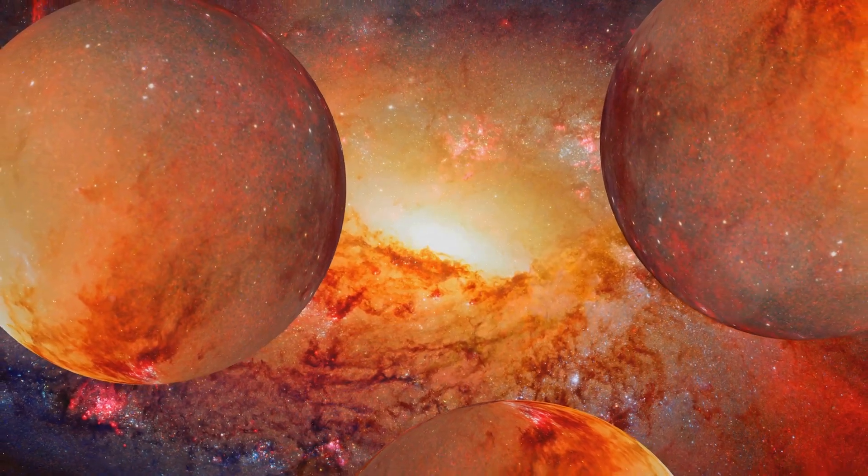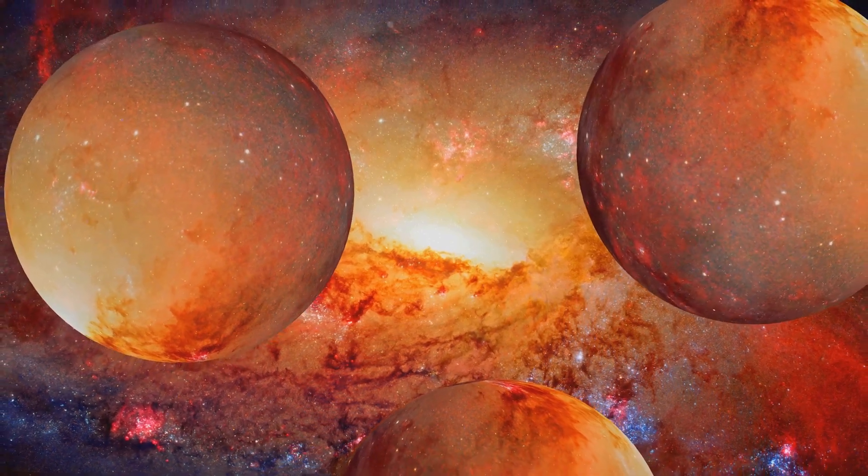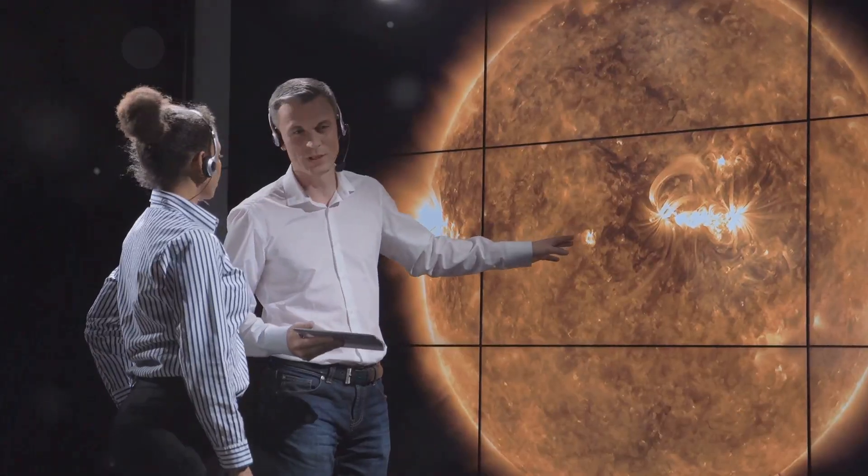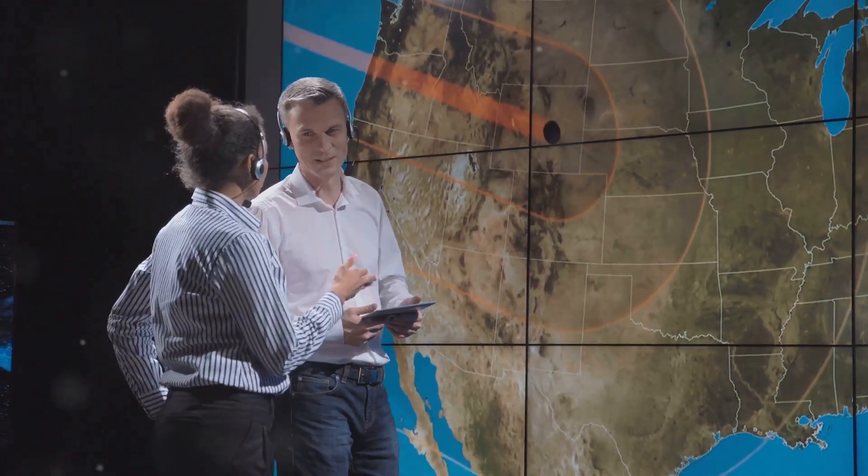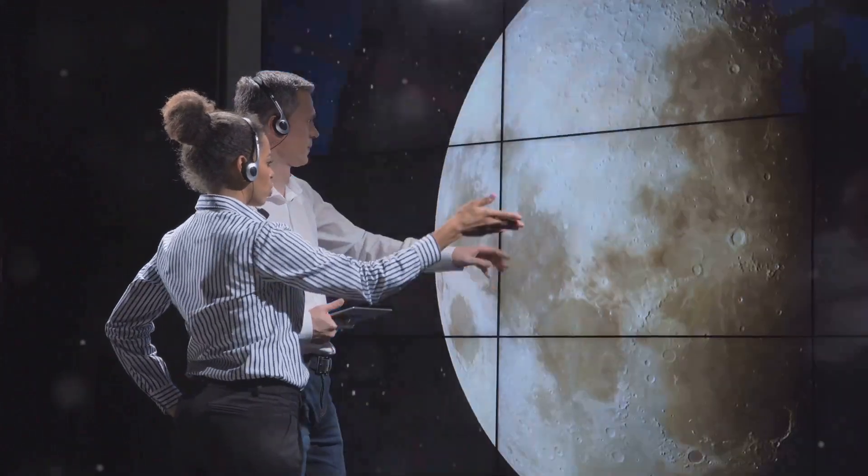This discovery challenges our understanding of how planets form and evolve. Traditional models of planetary formation are being re-evaluated in light of this new information. Scientists are now considering how such a planet could form in a triple-star system, and what this means for our theories of planet formation.